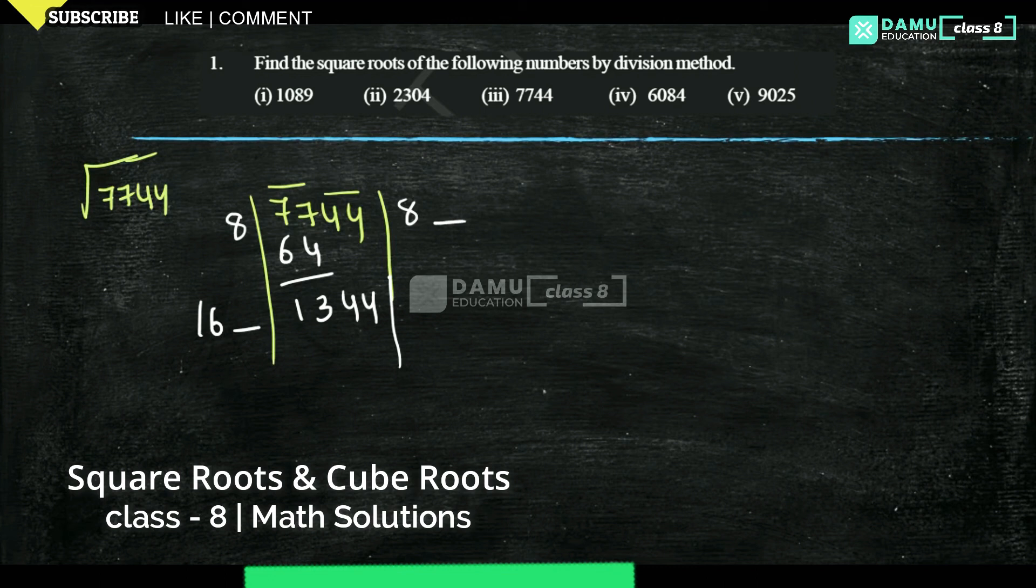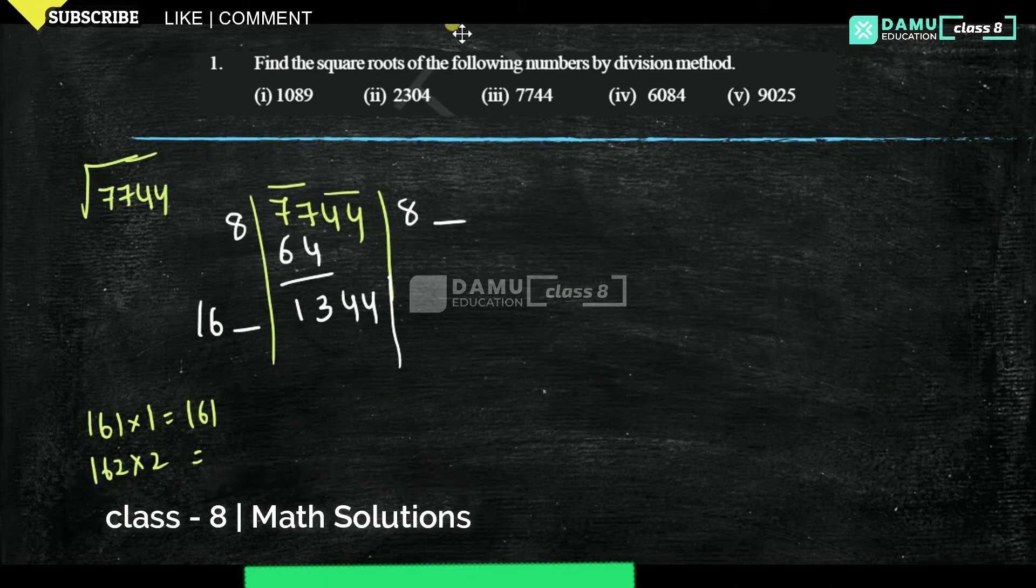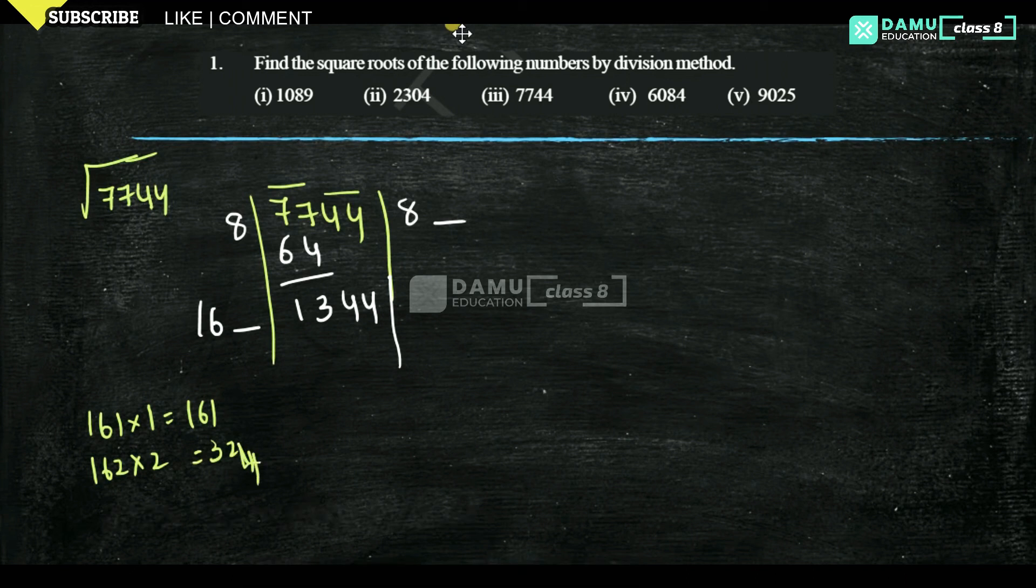8 times 2 is 16. Here one place is there. So what you can take? 161 into 1 is 161. Then 162 into 2 is 324. Like that, where you will get 1344. Let's take here, the unit is 4. So for that, you can take 168 into 8. 8 times 8 is 64, right? So you can take 168 into 8, which is 1344.